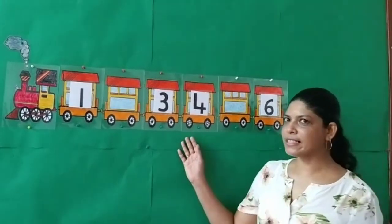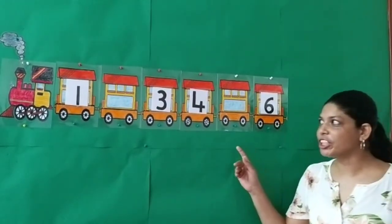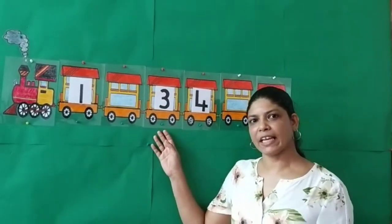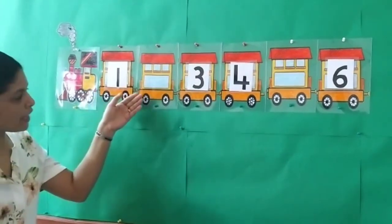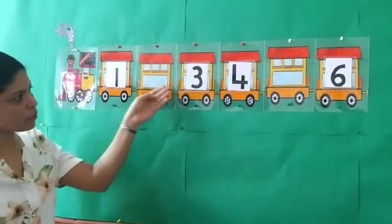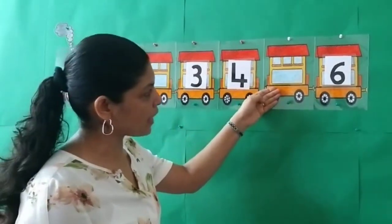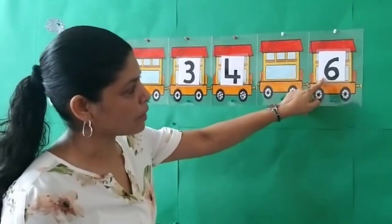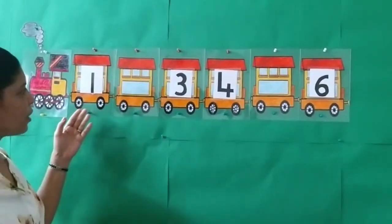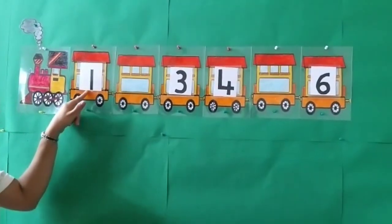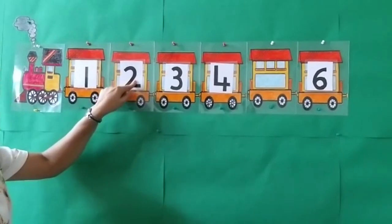Now here, as you can see, there is a train with numbers on it. And if you watch carefully children, there are some numbers missing. We have boogie number 1, and the next one has no number on it. Next we have boogie number 3, number 4. Again the next one is missing, and boogie number 6. Now let's count the numbers and see which are the missing ones. 1 — after 1 comes 2, so 2 is the missing number here.